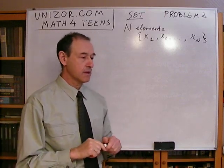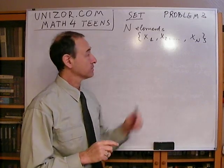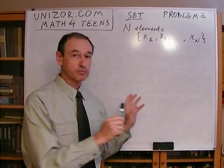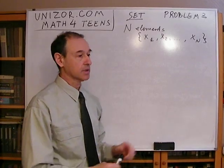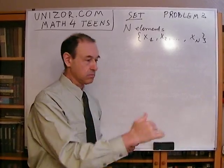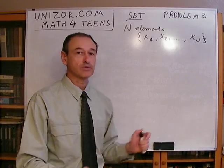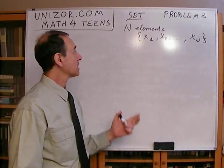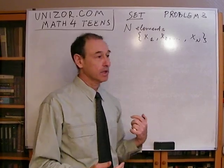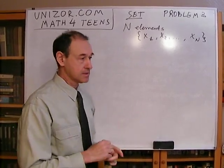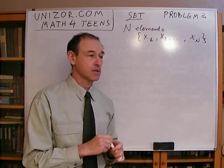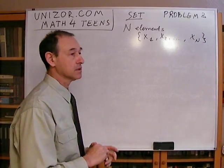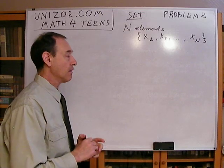If you went through problem number one for set theory, I was actually enumerating all the subsets of one particular set which contains four elements, and found that there are 16 different subsets. Basically, what I am asking right now is: how many different subsets does this particular set have? In case of n equals four, we had 16 subsets. This is a more general problem — we have n completely different elements, and the question is how many subsets does this have.